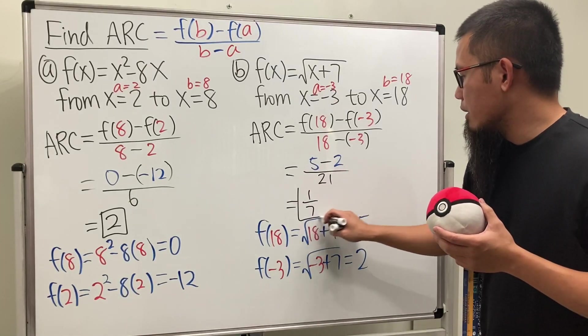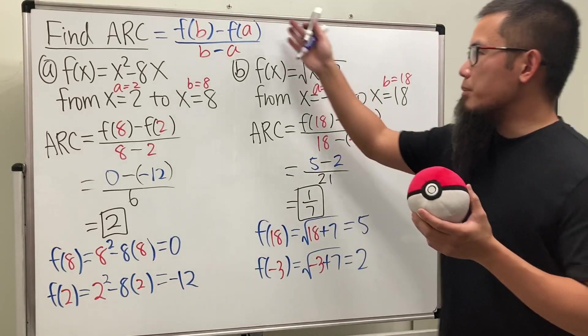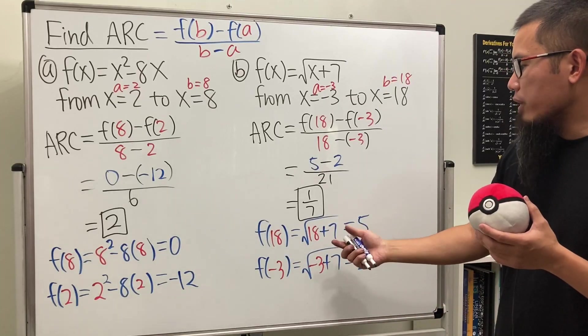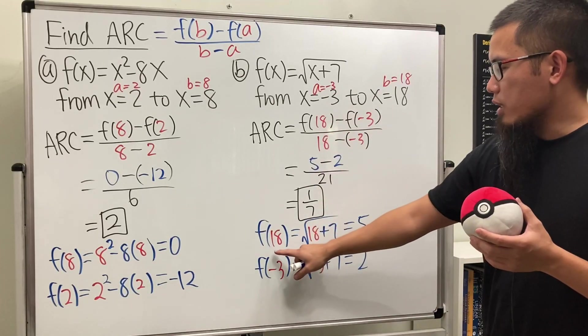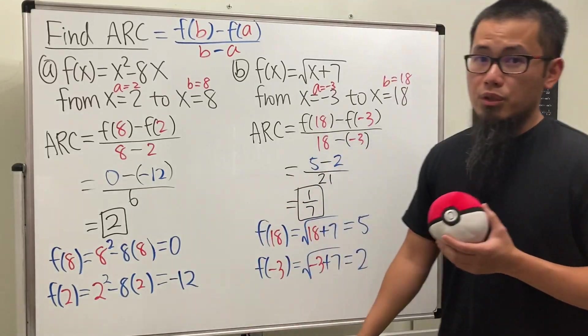We see this right here is 3 over 21, which is just 1 over 7. That's it. As long as you remember this formula, which is actually just the slope formula, and you organize when you are computing these numbers, and then plug it back in to the computation, you should be good for this.